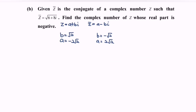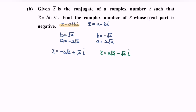Now refer back to the question: we need to find z equals a plus bi whose real part is negative. This gives us two candidates: z equals negative 2 square root of 2 plus square root of 2 times i, and z equals 2 square root of 2 minus square root of 2 times i. Since the real part must be negative, our answer is z equals negative 2 square root of 2 plus square root of 2 times i.